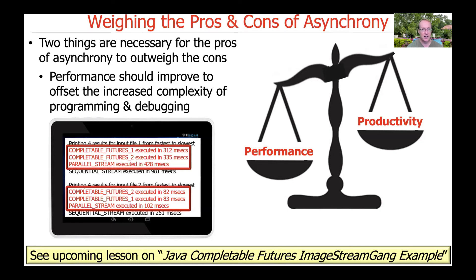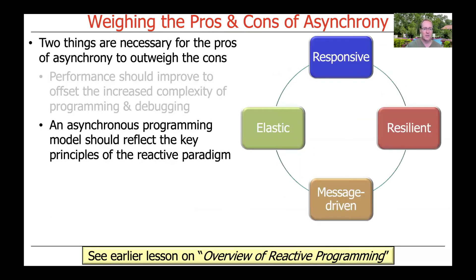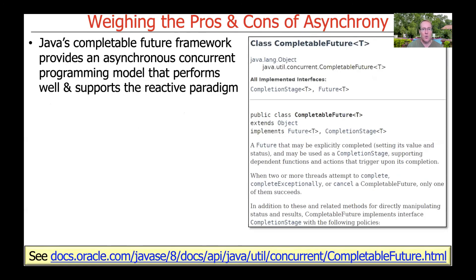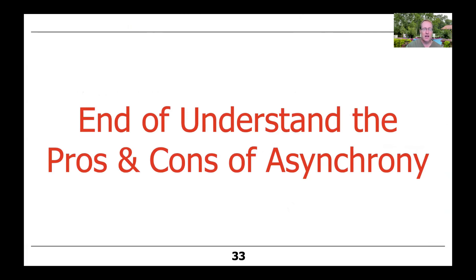The parallel streams version is easier to program but doesn't run as fast. The other thing we'd like is for the asynchronous programming model to reflect more intuitively the key principles of the reactive programming paradigm: responsiveness, resilience, elasticity, and message-driven behavior. The good news is that Java's completable future framework provides an asynchronous concurrent programming model that performs well and supports key elements of the reactive paradigm, and we'll explore that in much more detail as we continue.